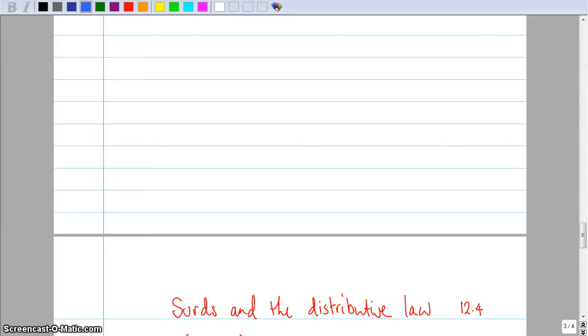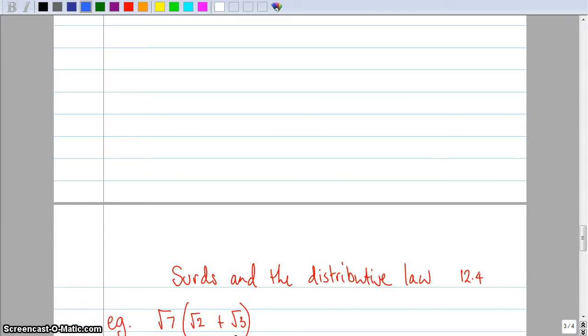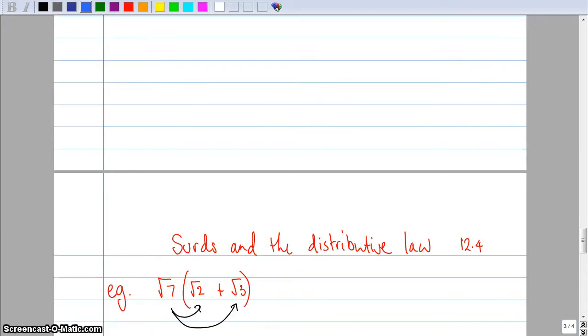But it means that you can do things like this in my example. So the distributive law, you don't really need to know that, you just need to remember that when you expand brackets, it means that root seven is distributed to the root two and also to the root three. That's kind of what the distributive law is. Anyway, let's just get down to what we actually need to do.